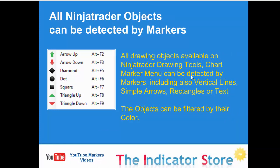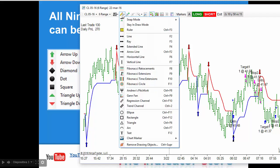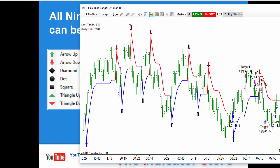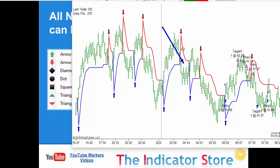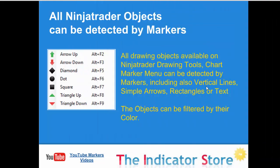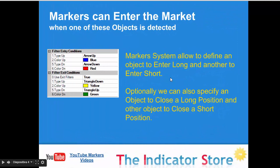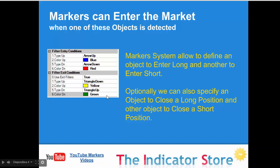The objects that Markers can detect are almost all the chart markers on this menu — all chart markers — and also several others. For example, we can detect vertical lines, arrow lines. So most of the indicators that paint a signal can be automated. We can configure one object to enter long, another object to enter short, and also we can configure objects to close a position.